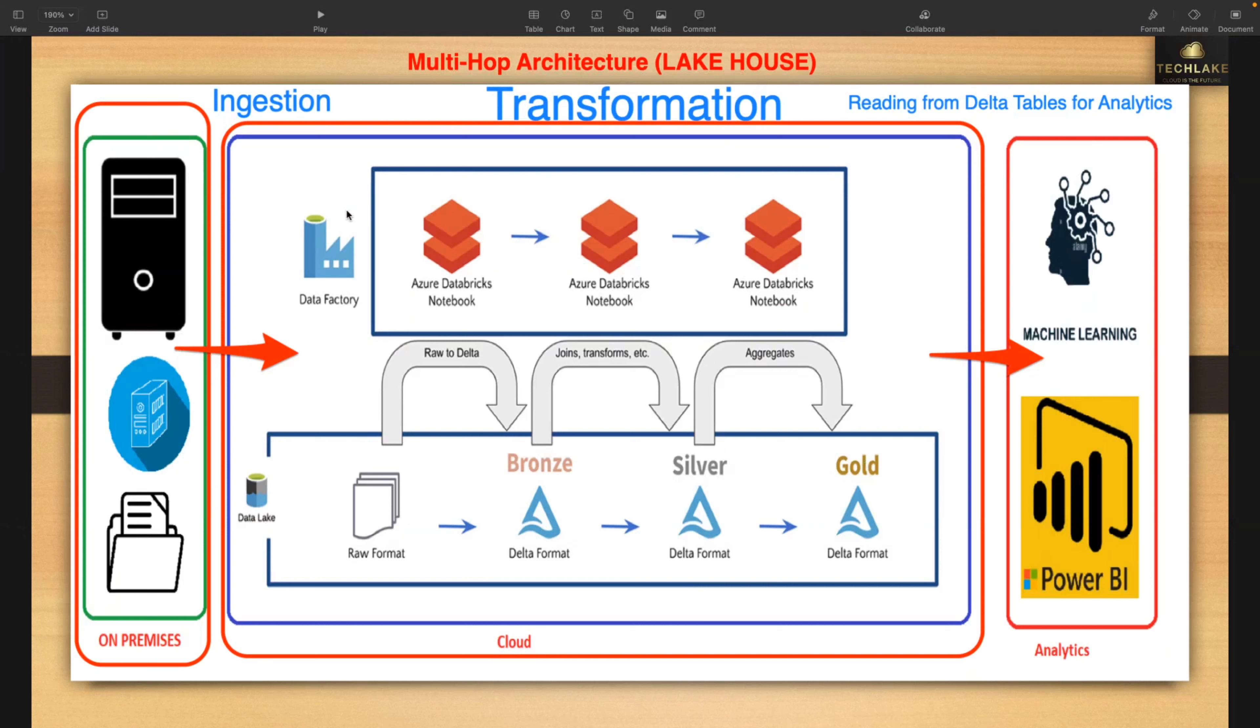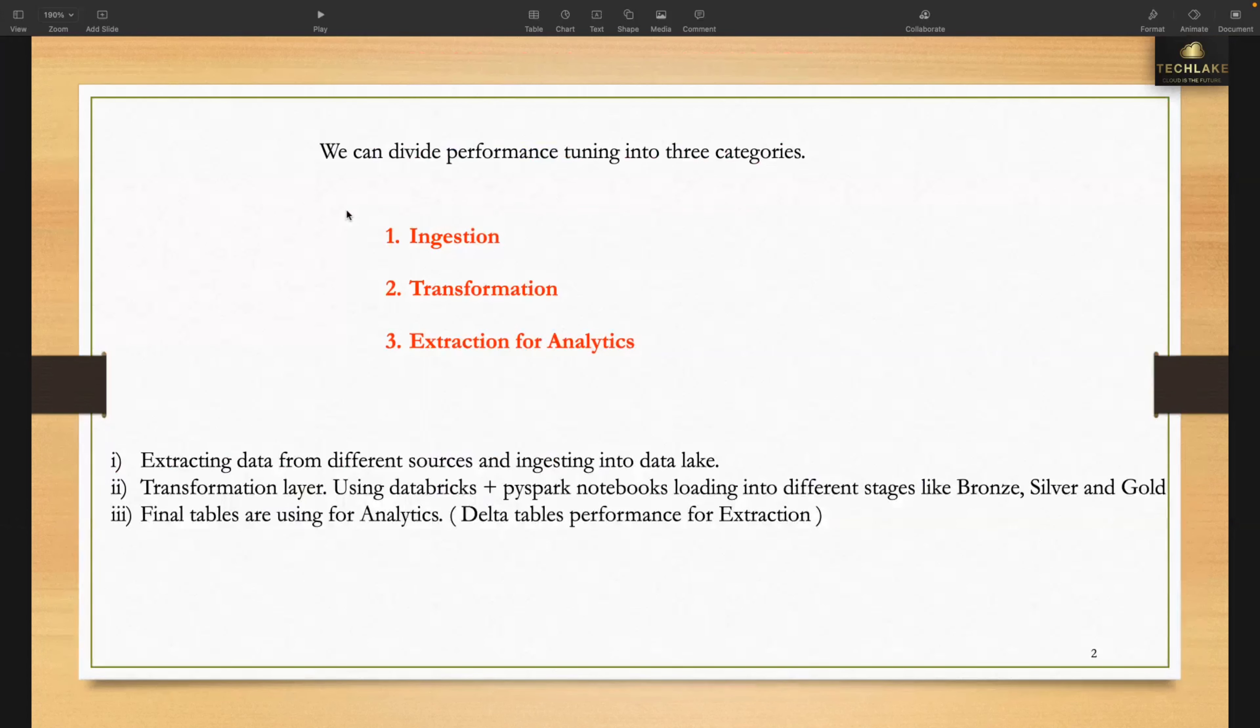Is Delta tables causing the issue, is your transformations causing the issue, is ingestion causing the issue, or is it taking more time? First we will divide into three parts: ingestion, transformation, and extraction for analysis. Then we will fine-tune individually.